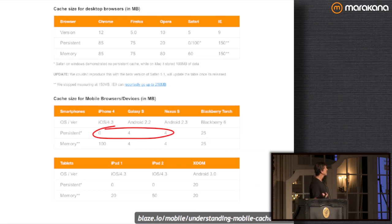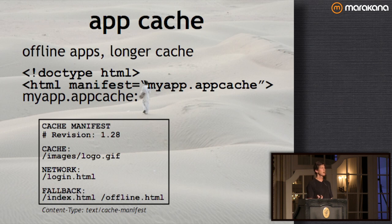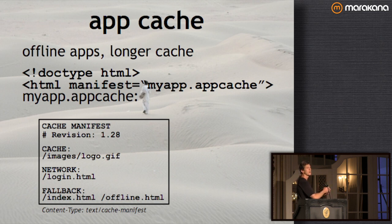Cache sizes are another issue — a study from Blaze.io, now part of Akamai, looked at mobile caches, which are much smaller than desktop browsers. Even desktop browsers fill up fairly quickly with heavy browsing. So web developers are looking at alternatives. One is App Cache, which helps with offline support and gives you a dedicated cache for your website — typically about 5 megabytes — whereas the browser cache is shared with all other websites the user visits.